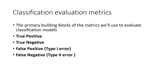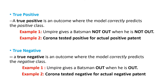Let us see when a model is constructed, whether that model correctly predicted the data or not, with the help of these four evaluation metrics. The first one is true positive, the second is true negative, the third is false positive — also called type 1 error — and the fourth is false negative, also called type 2 error. Let us see each one clearly with an example.